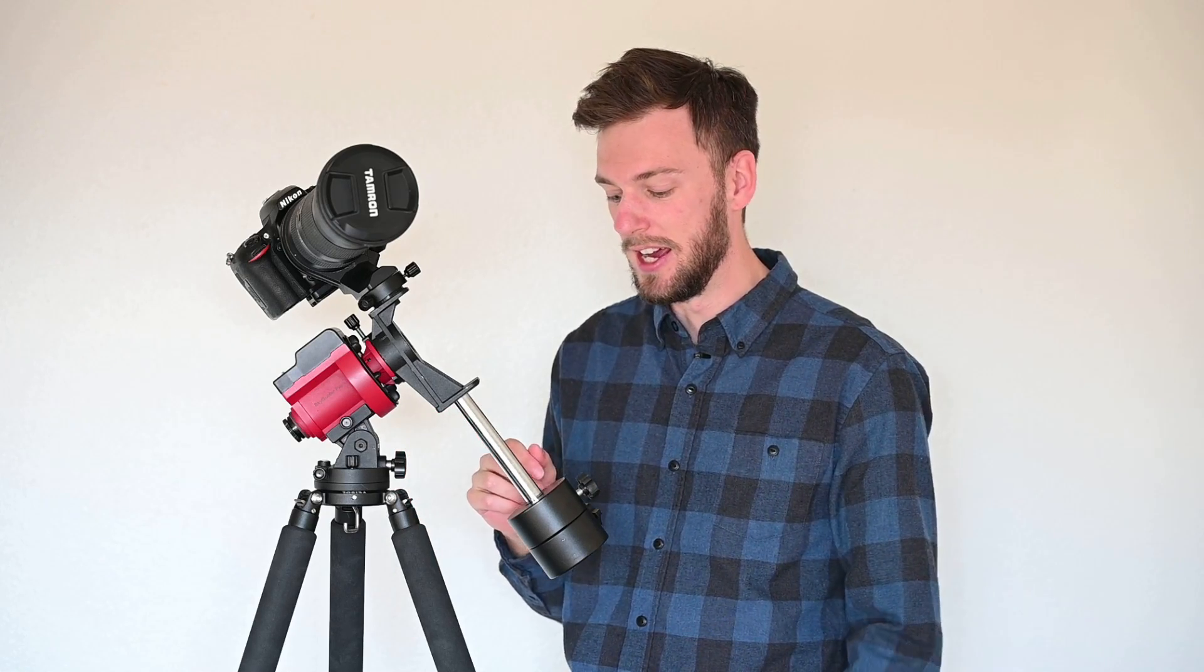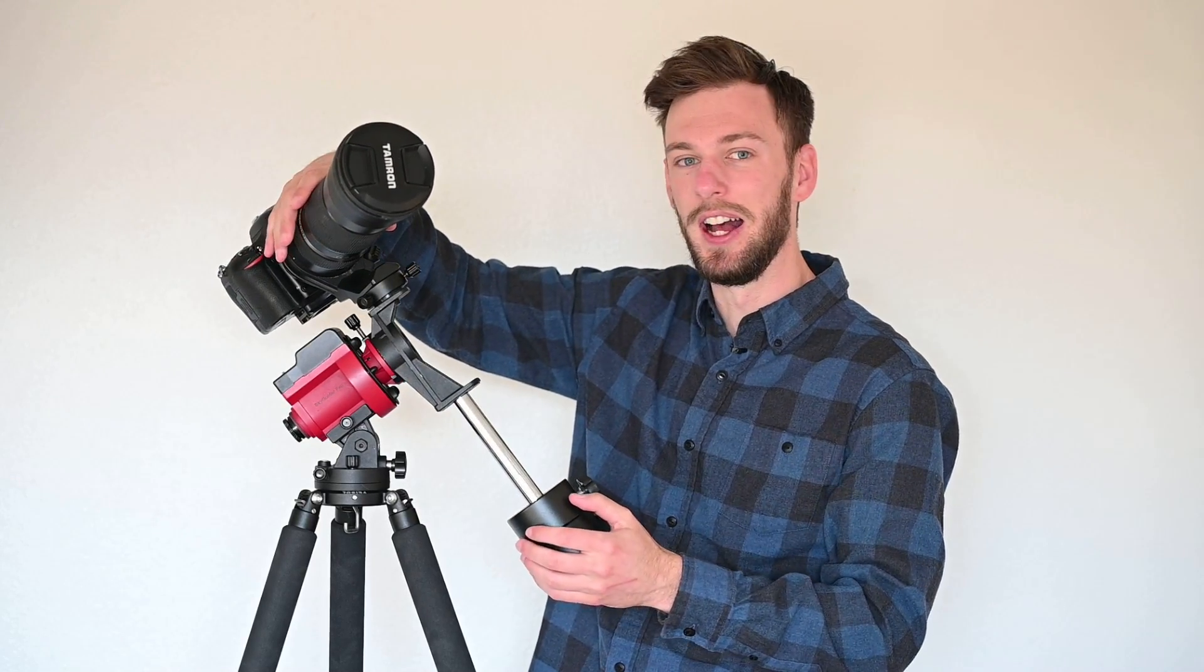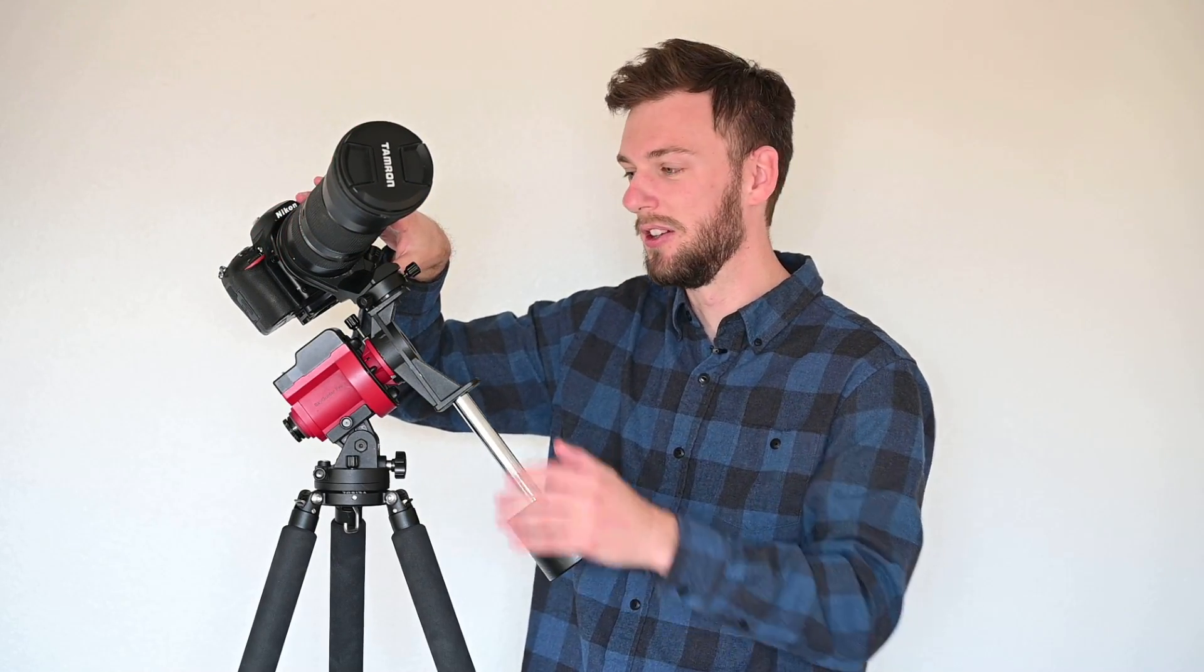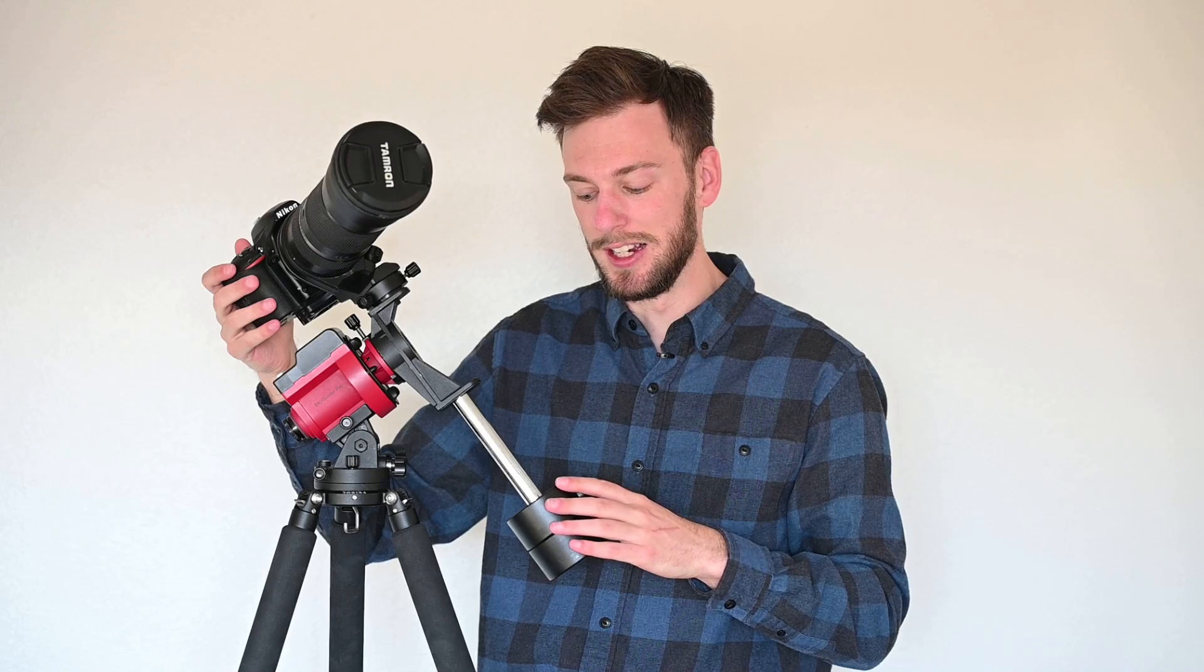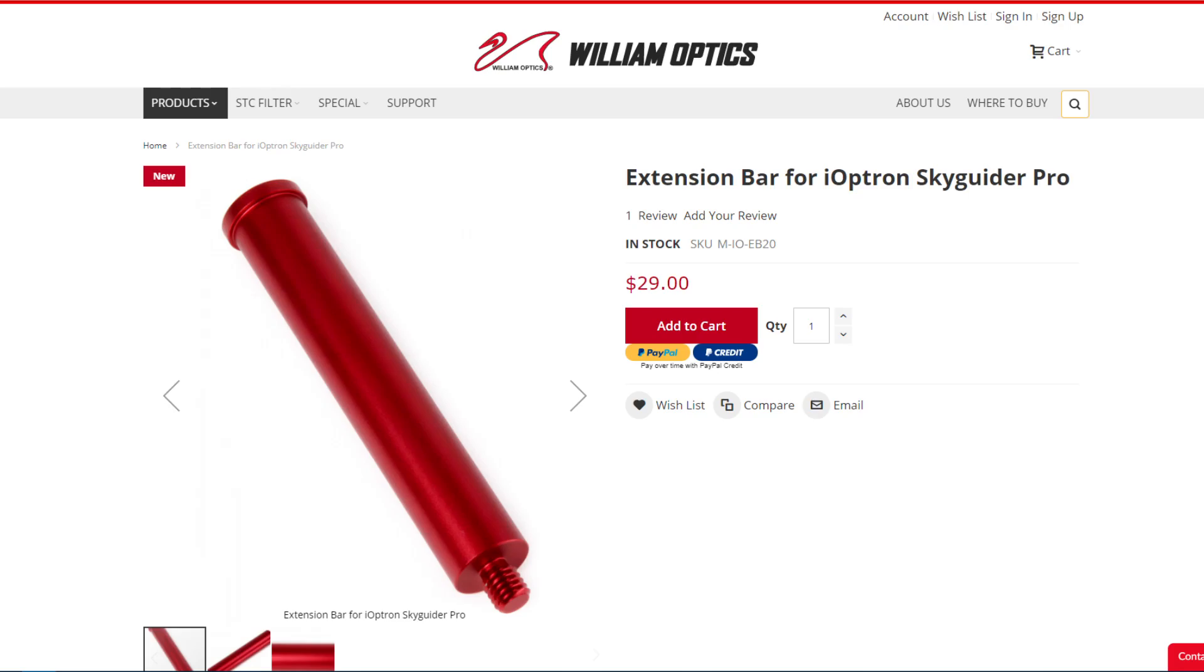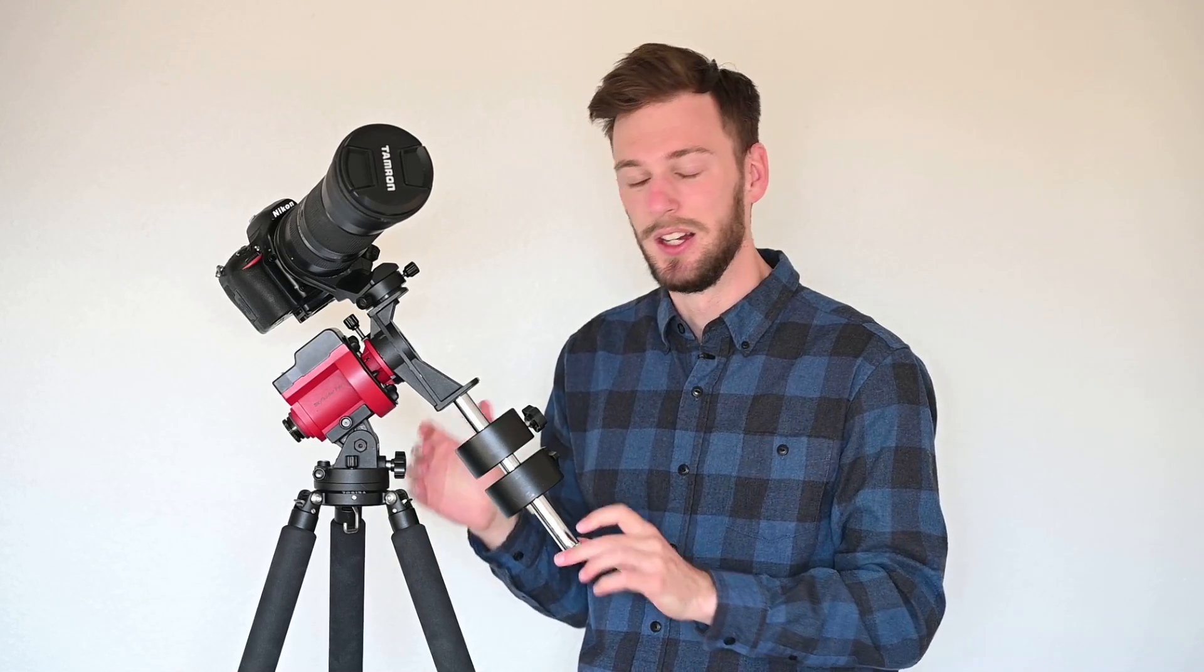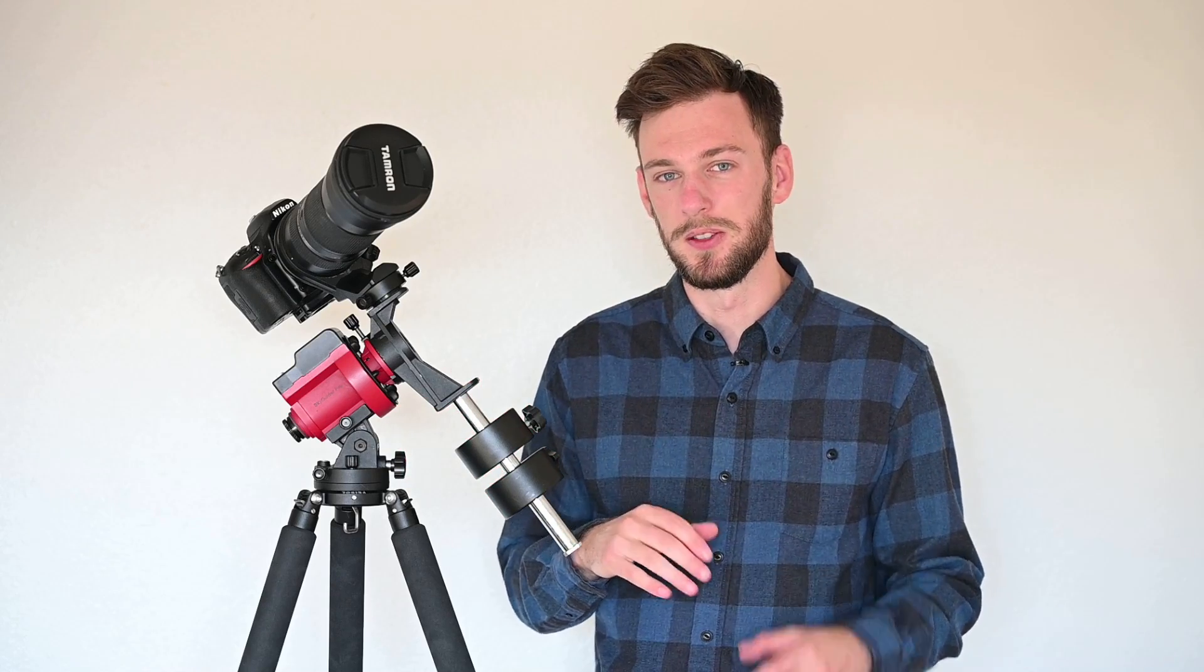Finally, the last problem is with the counterweight. I have two counterweights here, and that's way too much weight because I don't have a bigger lens, no ball head, and no guide scope attached. But usually I will need these second counterweights. William Optics released a little extension rod that screws onto the bottom of this counterweight rod. We're going to test this today to see if we can get away with a single counterweight rather than needing two. So we talked about the problems. Next I'm going to swap everything out and show you the William Optics parts.